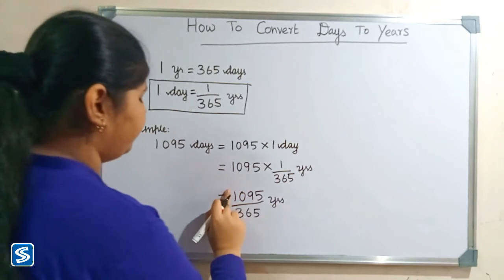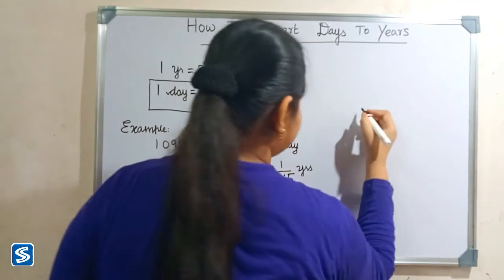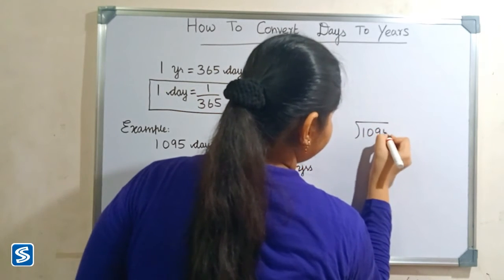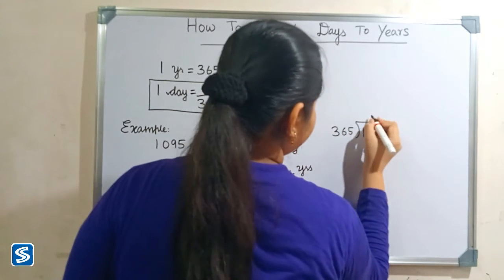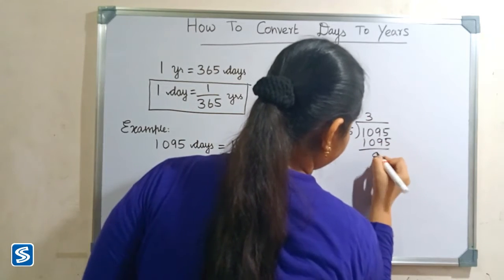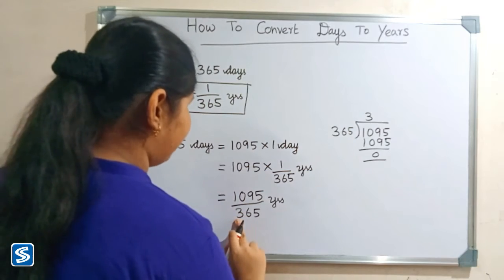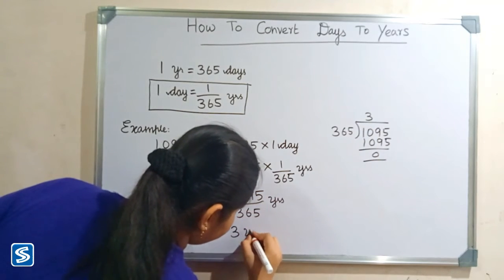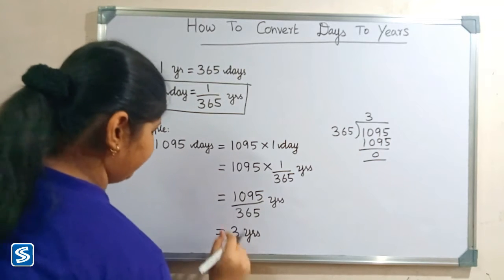Now we have to divide 1095 by 365. Come on, let's divide it. So when we divide 1095 by 365 years, our answer will be three years. So 1095 days is equal to three years.